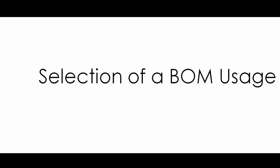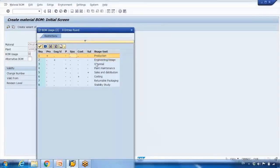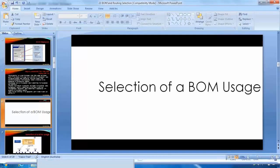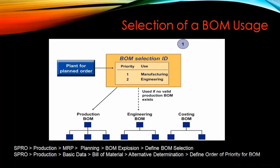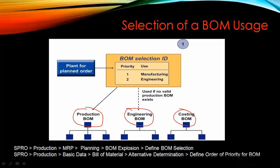Now let's look at the selection of BOM usage. We have different BOM usages when you create in CS01 — you can select usage one, two, three. We used one for production. From the customizing point of view, the system needs to know to select the first one and whether to pick up alternatives. For example, you may have created a production BOM with usage one, an engineering BOM, and also a costing BOM. In customizing you can define that the production BOM is the first priority.